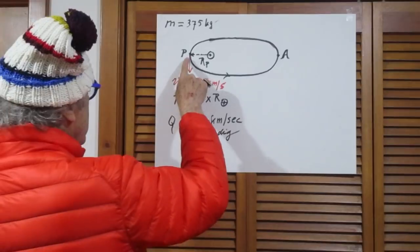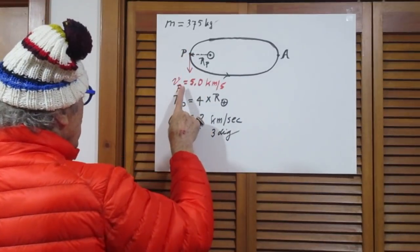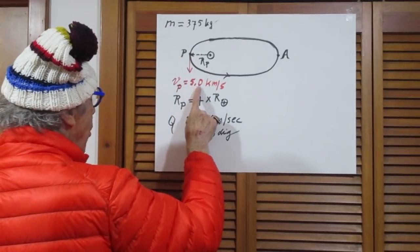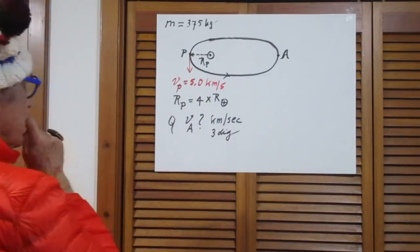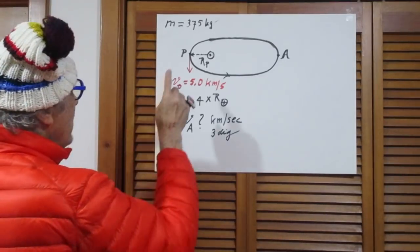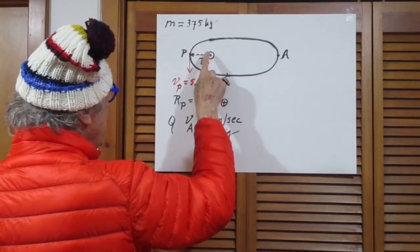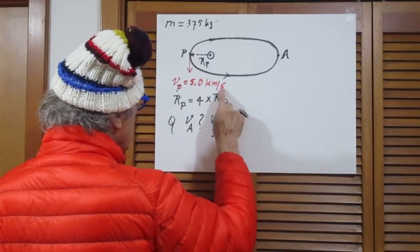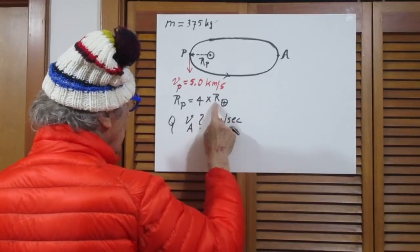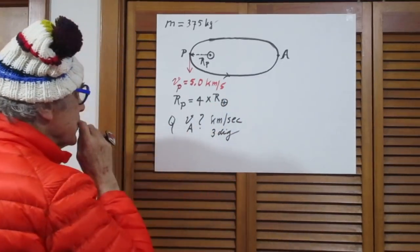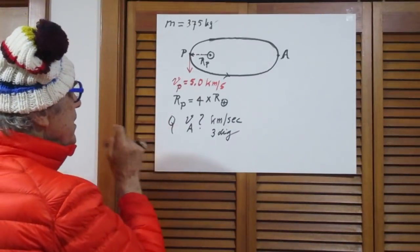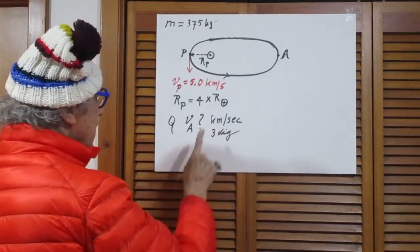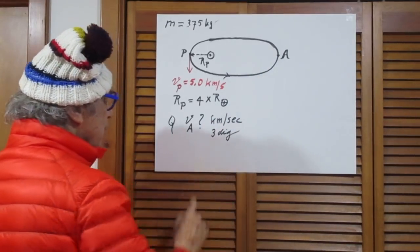At perigee, the speed of this satellite is 5.0 kilometers per second. And the distance from perigee to the center of the Earth is 4 times the radius of the Earth. This is my symbol for the Earth's radius. And the question is, what is the speed at apogee? In kilometers per second, three digits.